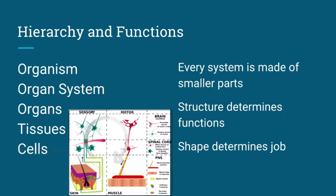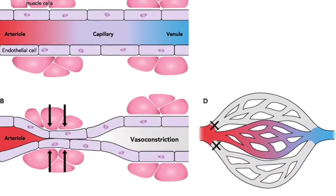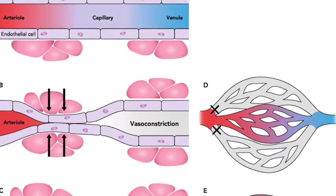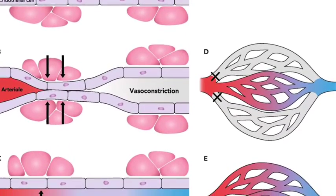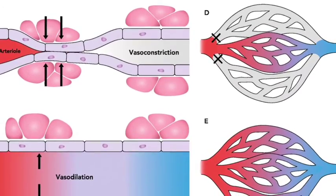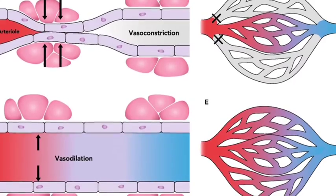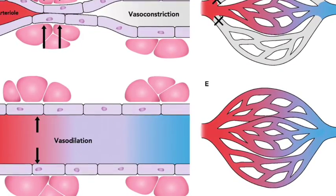A key concept in this unit is that structure determines function — the shape of a part determines what job it can do. For example, the shape of your arteries and veins, that tube shape, that straw shape, allows blood to pass through it. Also, those arteries and veins are flexible. Their shape allows them to stretch out and squeeze together, which allows the blood to flow through your arteries and for your body to control where blood goes. Squeeze an artery and you have less blood going there; stretch an artery out and you have more blood going there. The structure of your veins and arteries determines its function, which is to allow blood to flow throughout your body.